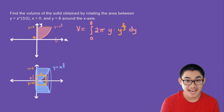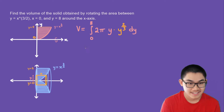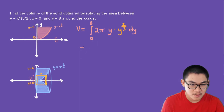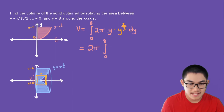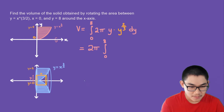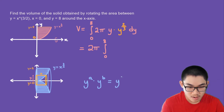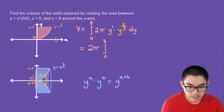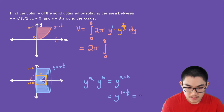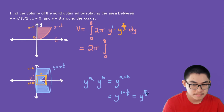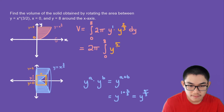The last step is to evaluate this integral. Since 2π is a constant we move it outside, giving us 2π times the integral from 0 to 8 of y times y^(2/3). Using the exponent rule — y^a times y^b equals y^(a+b) — the exponent becomes 1 + 2/3, giving us y^(5/3) dy.